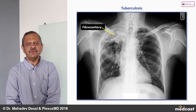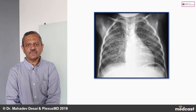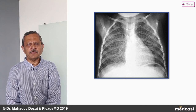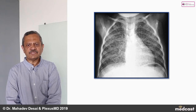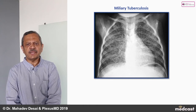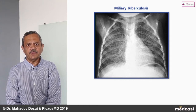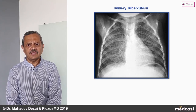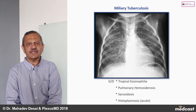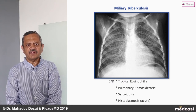These very small, tiny pinhead opacities — about a millimeter or two — spread throughout both lung fields are most commonly diagnosed as miliary tuberculosis. An important follow-up question is: what are the differential diagnoses of such miliary shadows? Whenever you find such tiny shadows, you should consider several differentials.